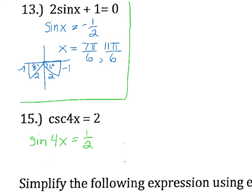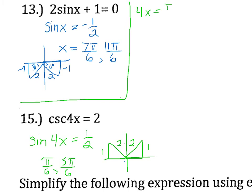For number 15, I have cosecant of 4x equals 2, so I'm going to change it to sine of 4x equals 1 half. I need to find where sine equals 1 half. Sine is positive in the first and second quadrants. The opposite side is 1 and the hypotenuse is 2, so I know I'm dealing with a 30 degree angle. My two values are pi over 6 and 5 pi over 6. Before dividing by 4, I need to write both solutions in general form: 4x equals pi over 6 plus 2 pi n, and 4x equals 5 pi over 6 plus 2 pi n.